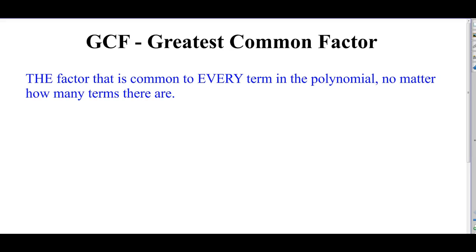This is my instructional video for factoring polynomials, and the one method we're going to talk about in this video is finding the GCF, or the greatest common factor. The greatest common factor is the factor — the one and only factor that's common to every term in the polynomial, and it's the greatest. So, the largest thing — the most factors that are all common to every term — that's the GCF.